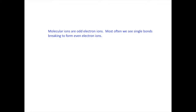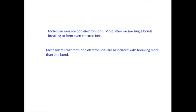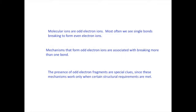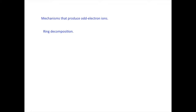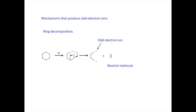Molecular ions are odd electron ions. All of the mechanisms discussed up to this point have produced even electron products. Mechanisms that involve breaking two or more bonds may produce odd electron ions. These mechanisms have special structural requirements and therefore are important clues to structure. One of these involves opening ring structures. Consider cyclohexane: ionization will necessarily break one of the carbon-carbon bonds. If the free radical tries to form a new bond, a bond on the other side will donate an electron and break off a neutral molecule. In this case, ethylene will be the lost molecule. The other fragment retains both the charge and the radical, which now appears in a new position. Therefore, it's an odd electron ion.